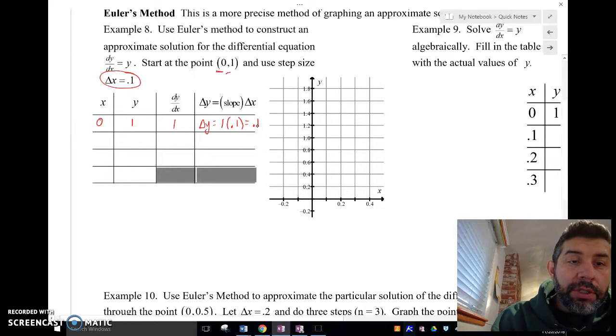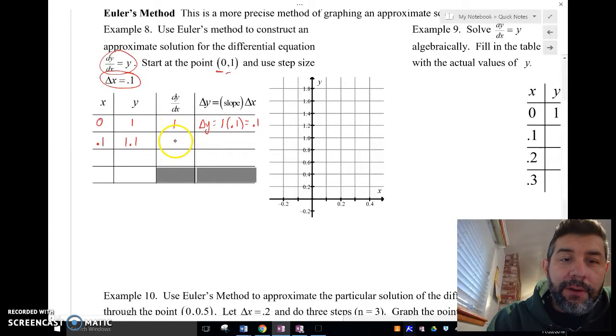So what I'm going to do is I'm going to go from my x, which was my starting point, and I'm going to add my delta x to that. So 0 plus 0.1 is 0.1. That's my change. And then I'm going to add my delta y, which was 0.1, to my y. So I get 1.1. Then I'm going to plug these two into my dy/dx and get dy/dx here. So that's going to be 1.1 in this case. So now my delta y is going to be 1.1 times my delta x, which was 0.1. And that's going to give me 0.11.